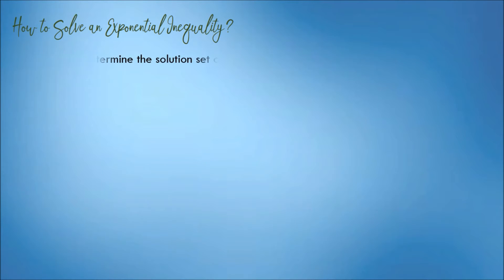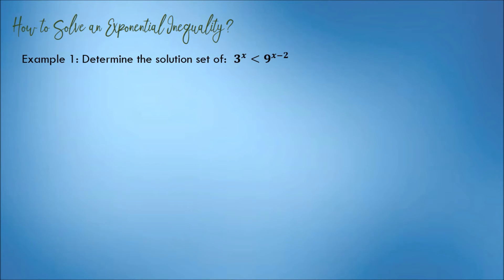Example number 1: Determine the solution set of this inequality. 3 raised to x is less than 9 raised to x minus 2.